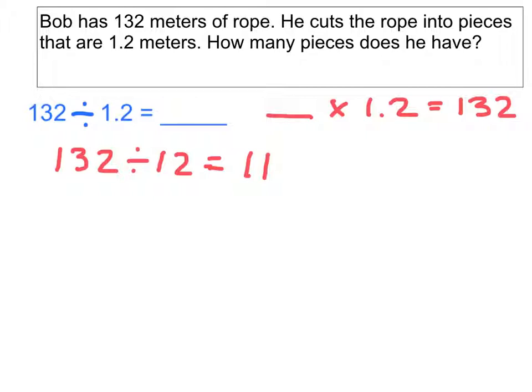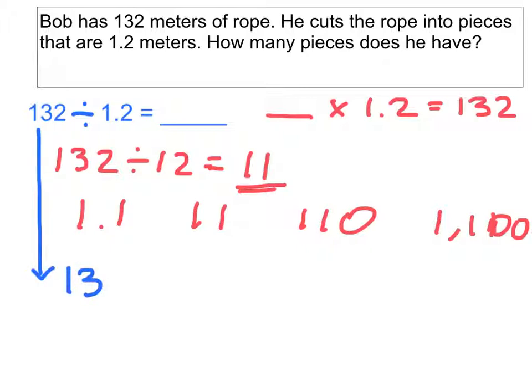So, now I need to think about my choices. Well, it could be 1.1, it could be 11, it could be 110. It could be 1,100. And so, I could go on and on. But I need to think to myself, is my answer going to be smaller or larger than this 11 here? Well, when I think about it, I know that I could do a little bit of estimation. I'm going to think about this problem in a different way. I'm going to think about it like this. 132 divided by, well, 1.2 is very close to the whole number 1. And so, if I do a little estimation, I know that 132 divided by 1 is 132, of course. So, my answer should be somewhere close to 132.